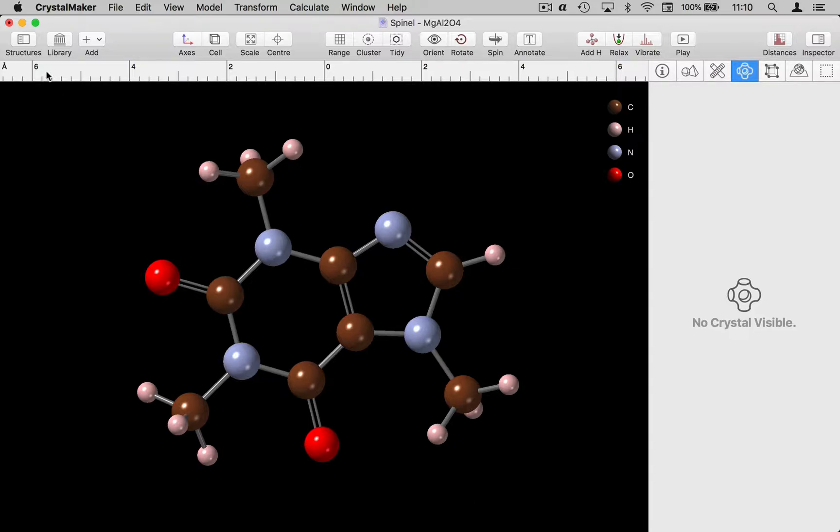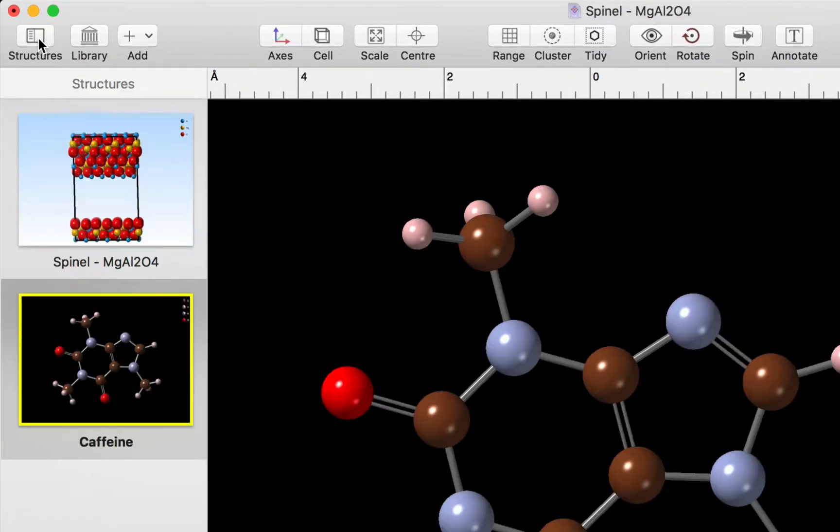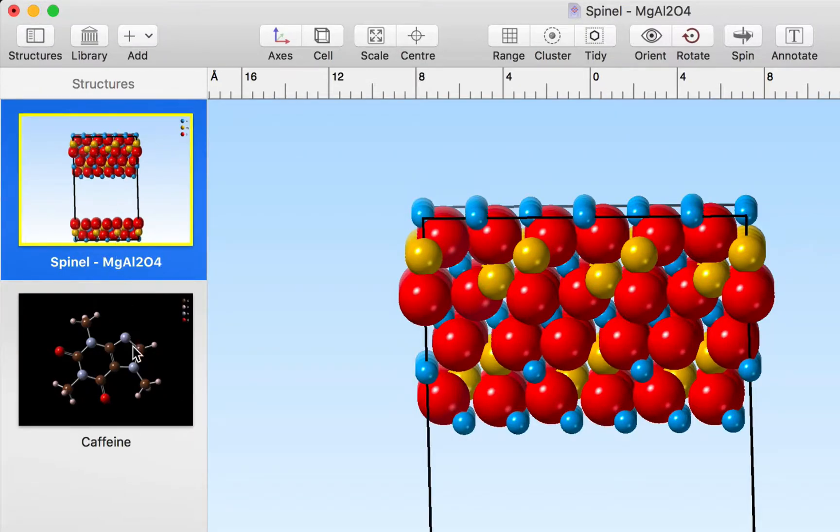Now where's that gone? If we open up our structures list we can see we've got two structures in the same document and currently they're separate structures.